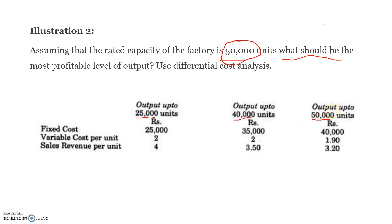Then output up to 50,000 units — if the company uses its entire maximum capacity of 50,000 units, the fixed cost will become 40,000, variable cost per unit is 1.9, and sales revenue is 3.2. Let us check which level is the most profitable level for the company using Differential Cost Analysis.